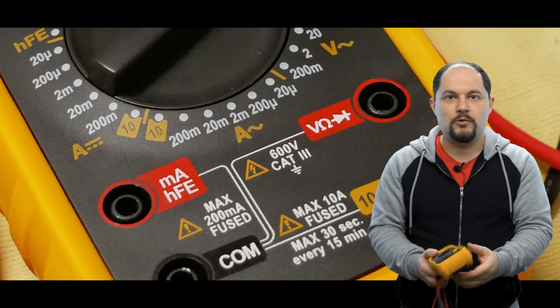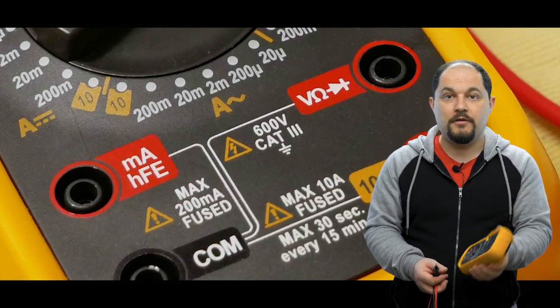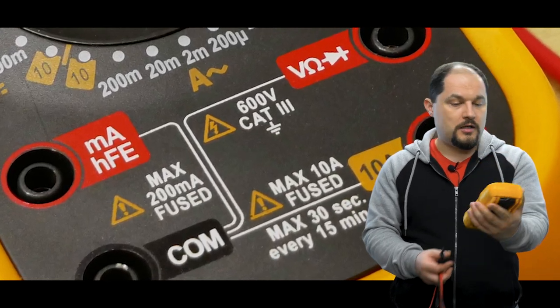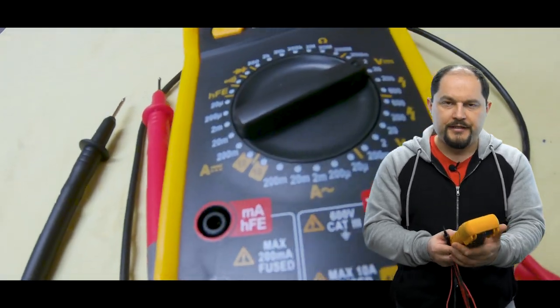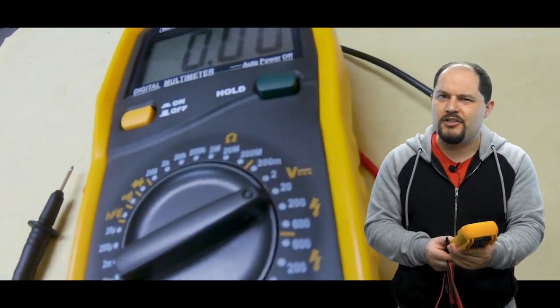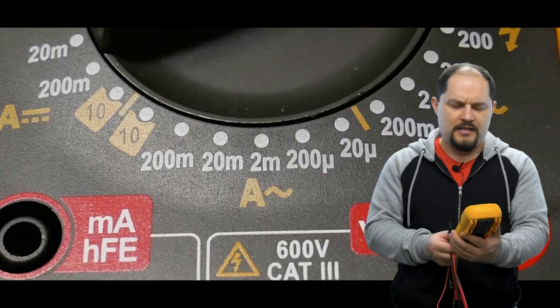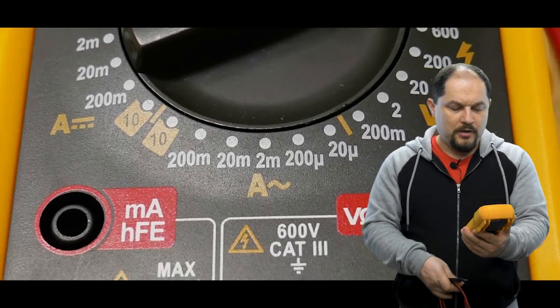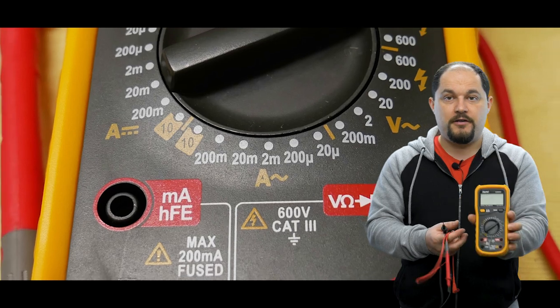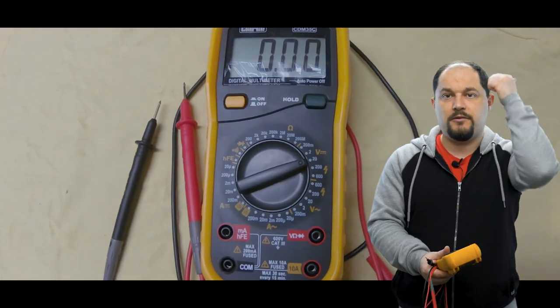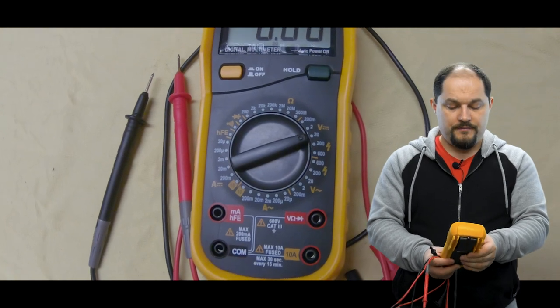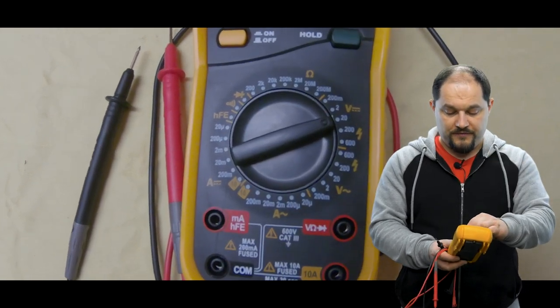So I ended up buying one from Machine Mart, a Clarke CDM-35C I think. They're not very cheap at 28 to 30 pounds, can't remember exactly, but very good. It's got a big screen as you can see on the videos behind me. It's got a hold button, loads of features.